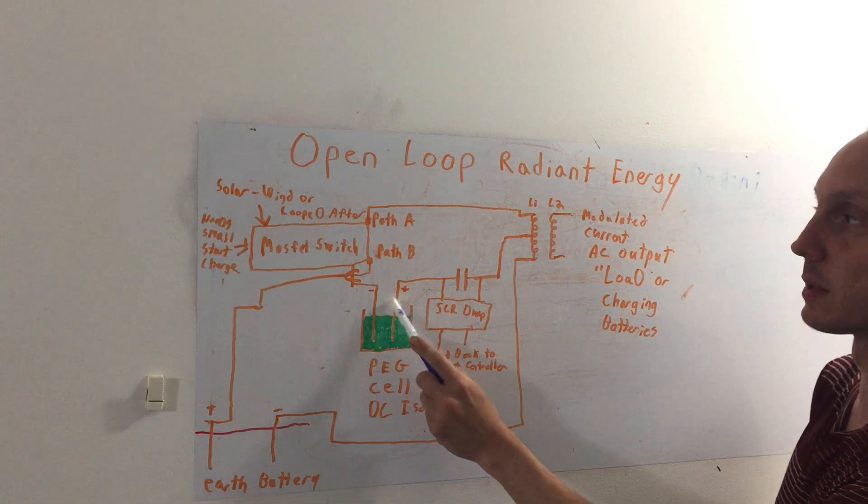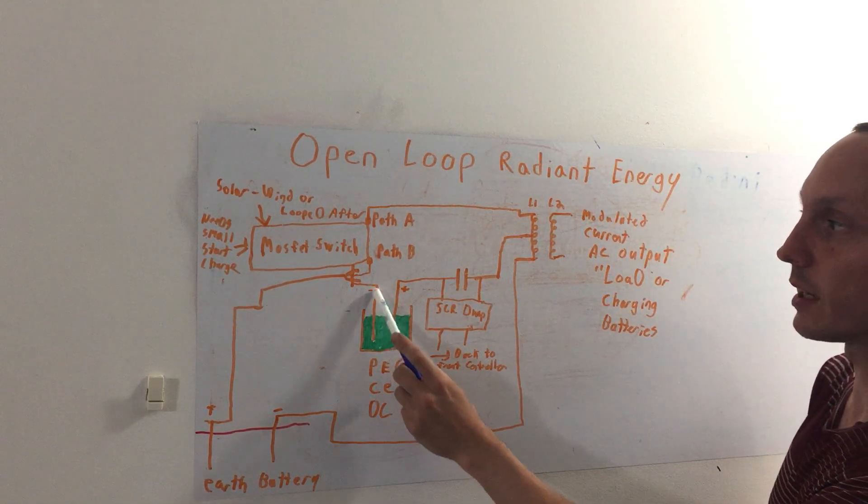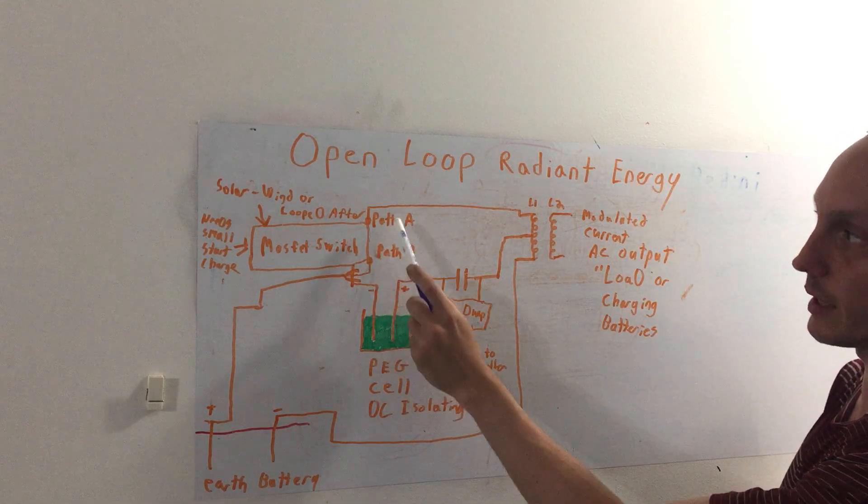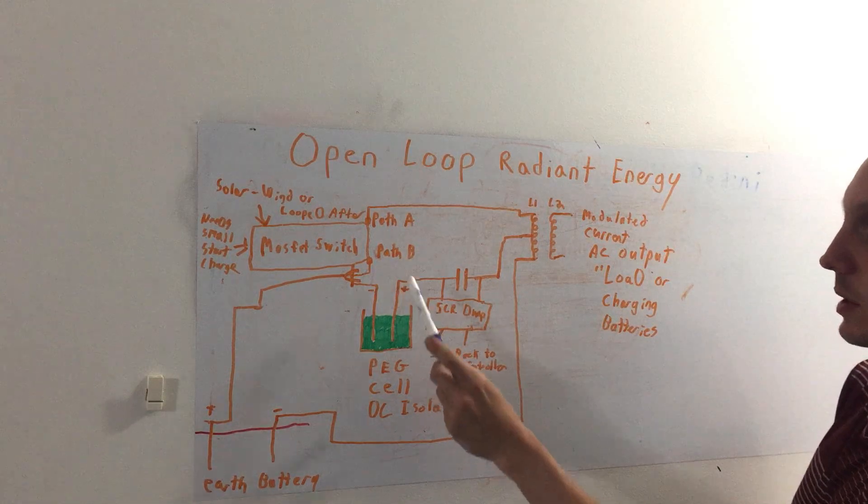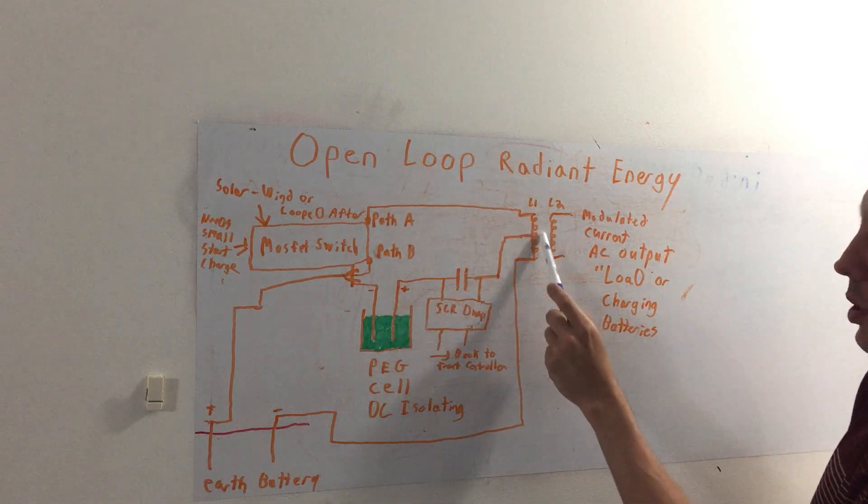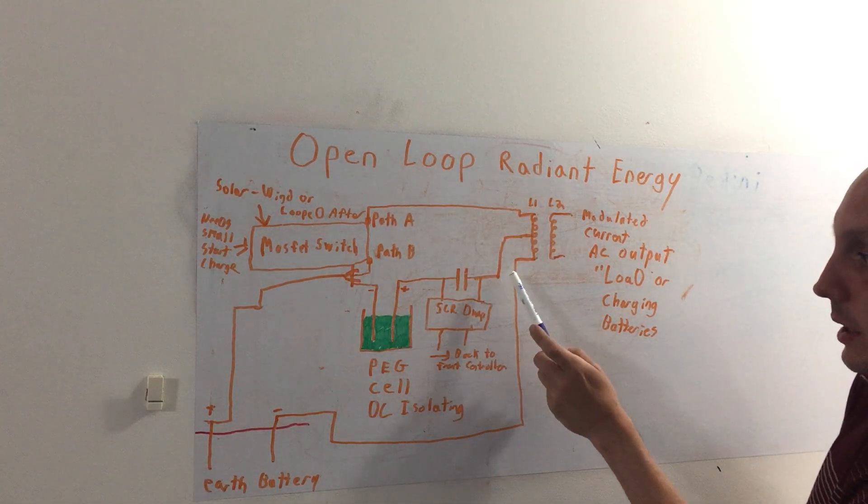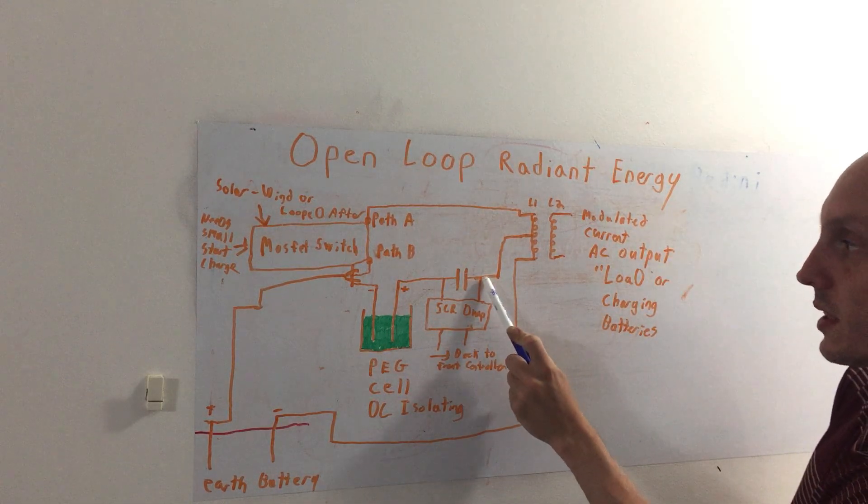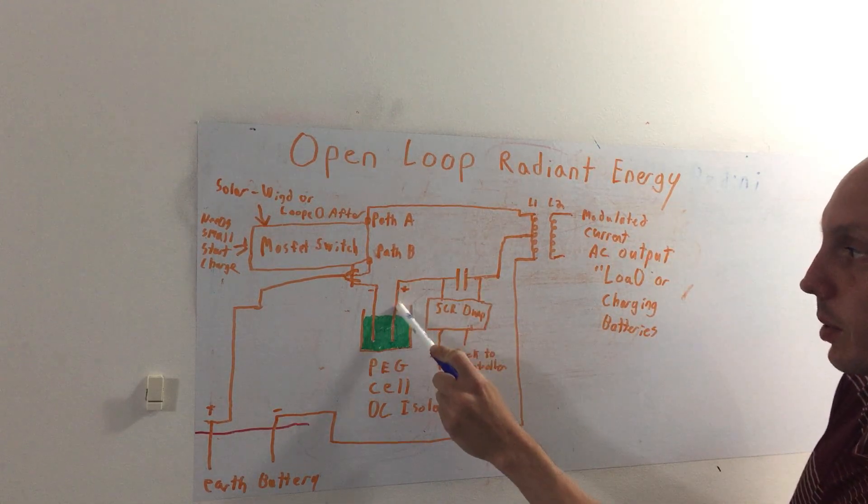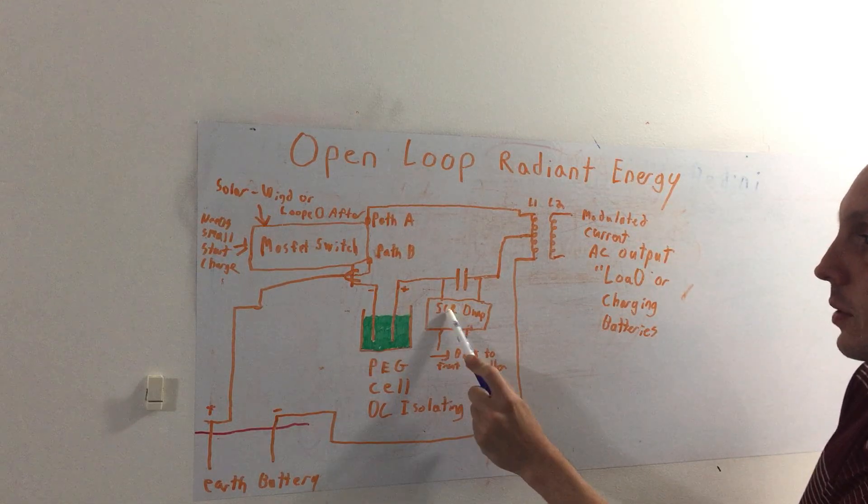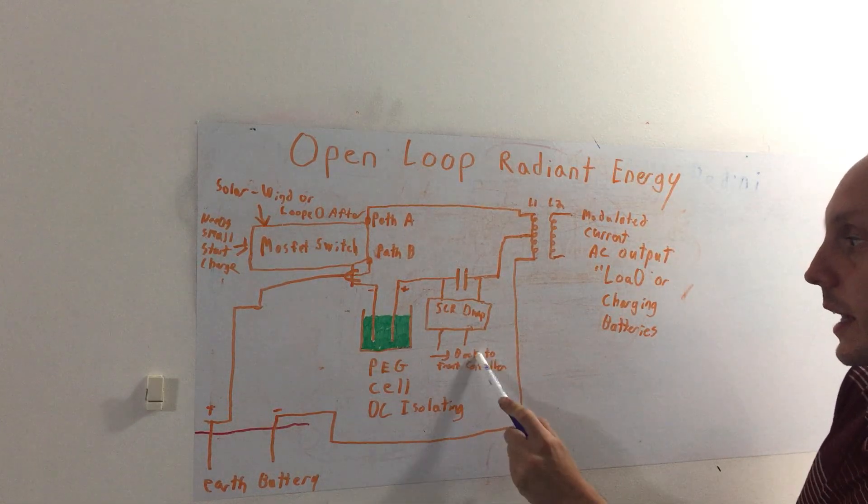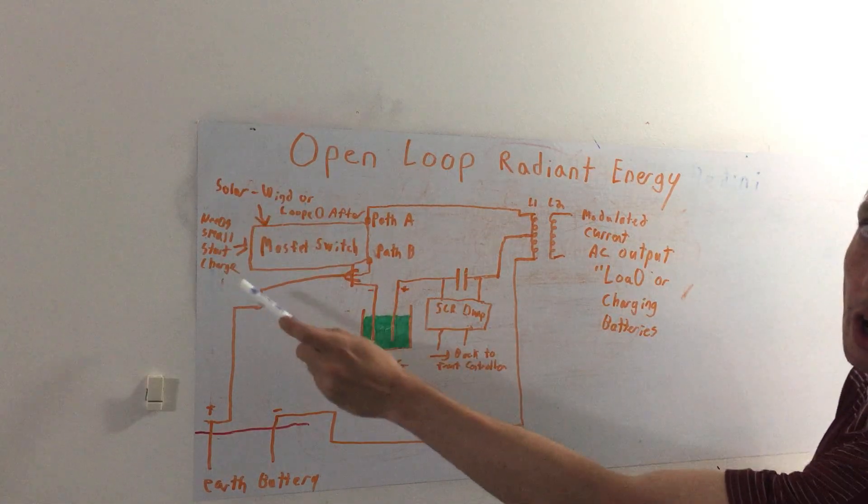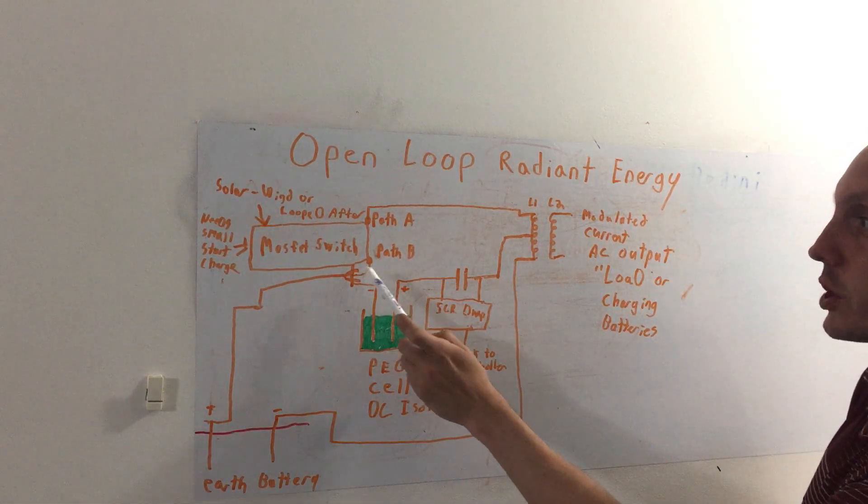The switch switches the negative path A, path B. So the path A is right here through the coil going back into the capacitor. You've got one side negative and one side positive here, and then there's an SCR dump. That can go back to the front controller's capacitor or charging battery.